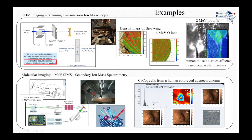This start signal trigger is obtained for thick targets using a beam chopper controlled in parallel with the acquisition system. For thin targets — where the beam can traverse through — the start signal can be obtained with a STIM detector placed after the target, as in the case of STIM imaging. So in parallel, one can apply both STIM and SIMS techniques simultaneously and get both density maps as well as molecular masses and molecular maps.